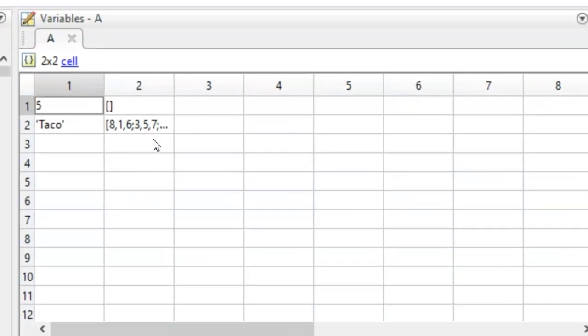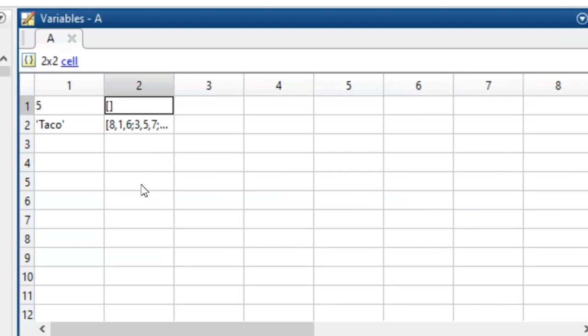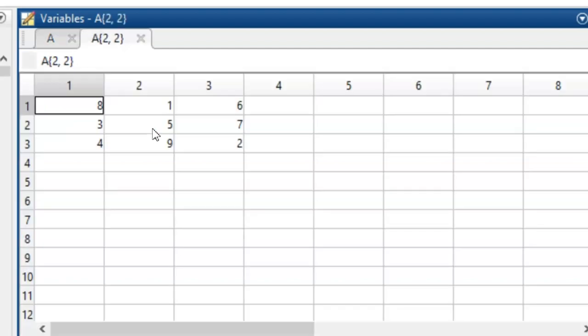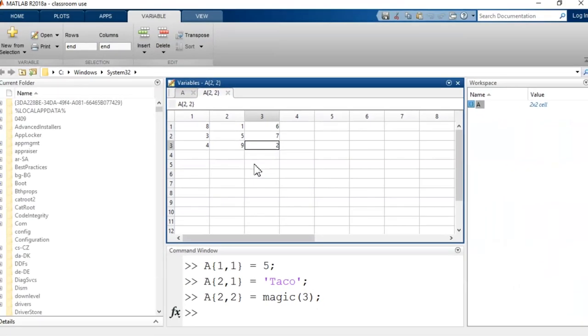In cell 1 comma 2, there are empty brackets which means no contents are in that cell. In cell 2 comma 2, I can see in the preview that some numbers are in here, but for more details I double click on that cell. This opens up another tab where I can view the full matrix. A good rule of thumb: when in doubt about how your code is working, explore the variables in the workspace.